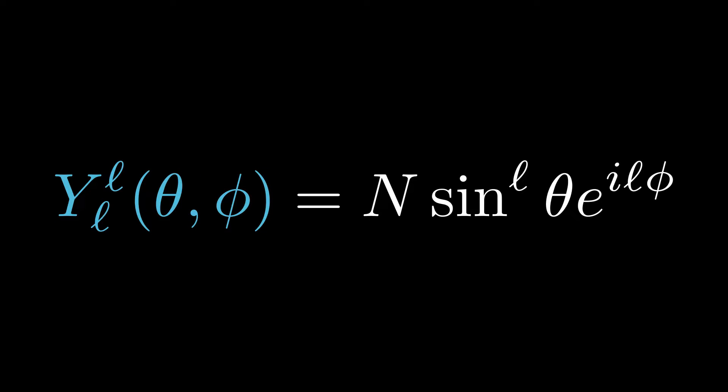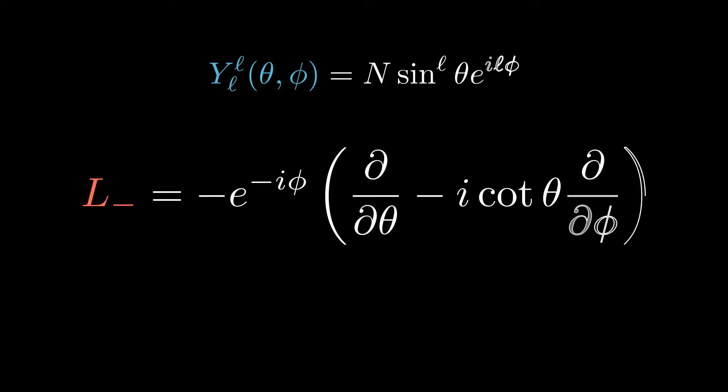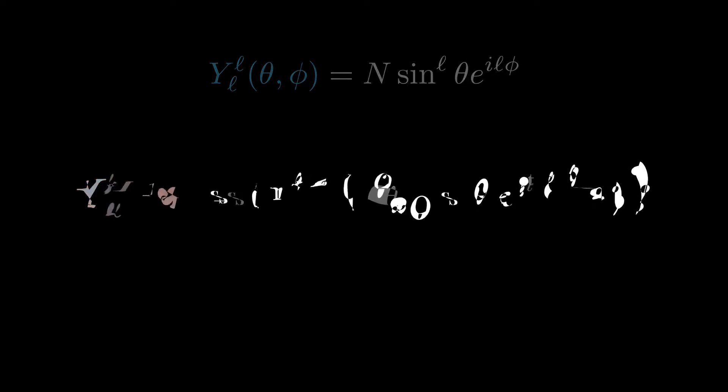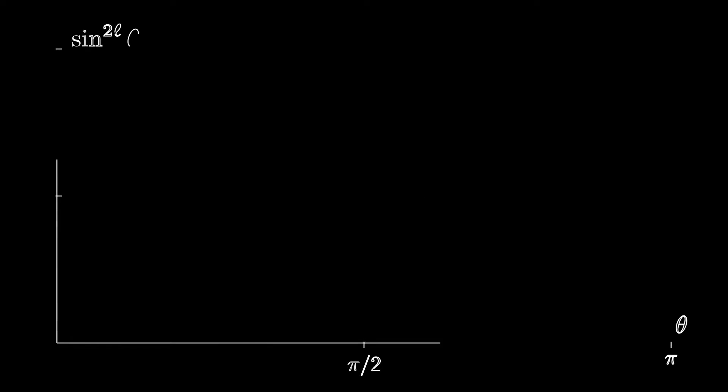We now have the spherical harmonics of the highest weight state up to a constant factor of normalization. To obtain the spherical harmonics with less projection of angular momentum onto the z-axis, we use the L_- operator in position representation. Working through the algebra, we get the spherical harmonics with M equals to L-1 as one less unit of phi dependence in exponential, and one less unit of sin theta dependence, and one more unit of cos theta dependence. The result of subtracting M by 1 and subtracting the exponent of sin theta by 1 and increasing the exponent of cos theta by 1 every time after using the lowering operator is completely general.